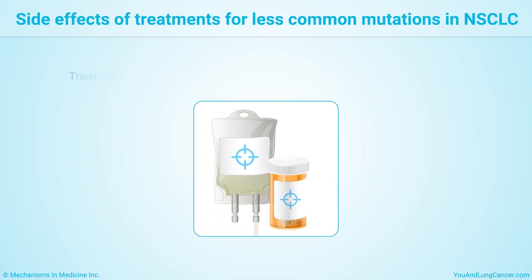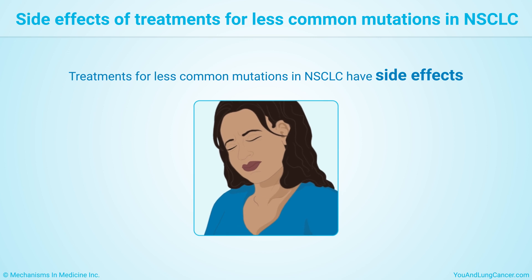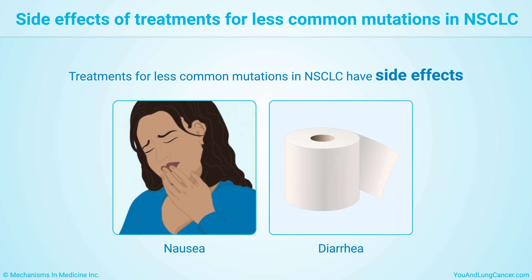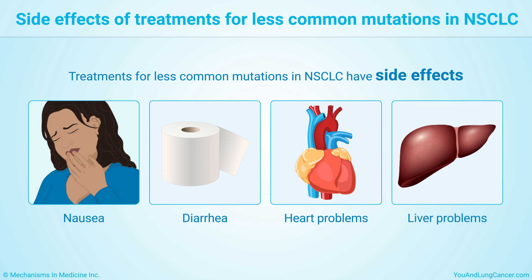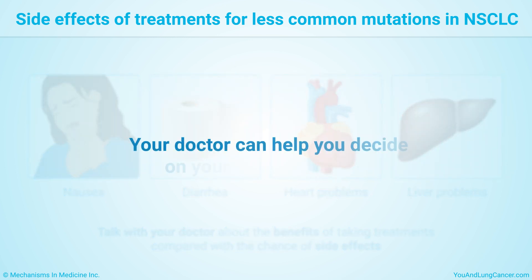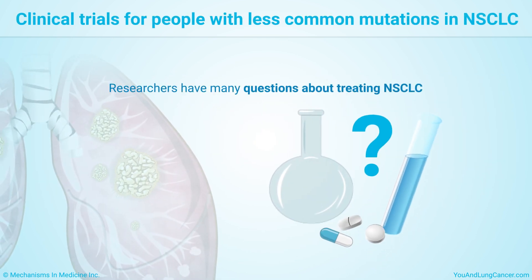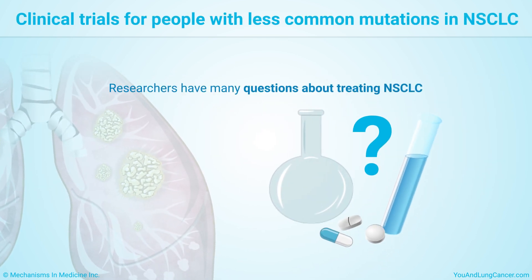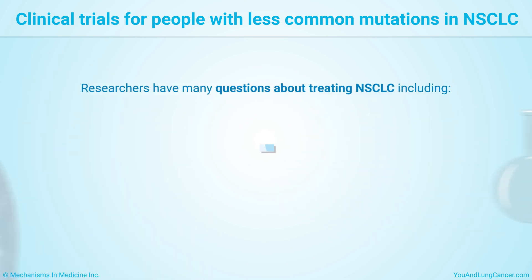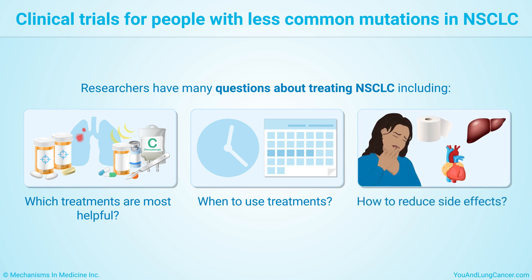Like every treatment, those for less common mutations in non-small cell lung cancer have side effects. These range from digestive symptoms such as nausea or diarrhea to more serious side effects such as heart and liver problems. Talk with your doctor about the benefits of taking one of these drugs compared with the chance of side effects. Your doctor can help you decide on your treatment goals. Researchers have many questions about treating non-small cell lung cancer in people with less common mutations, including which treatments are most helpful, when to use them, and how to reduce side effects.